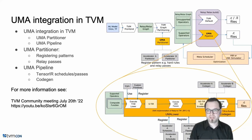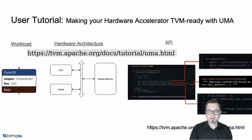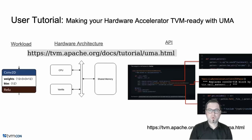In the scope of this lightning talk, I can only give you a tiny part of the big picture. If you're interested in more, have a look at the recording from the community meeting from July 20. A major goal of the UMA community is also to provide good documentation and executable step-by-step tutorials. For this reason, we created a user tutorial where a minimal accelerator called Vanilla — that can only process Conv2Ds — is integrated into TVM using the UMA APIs. The plan is also to soon add more advanced templates to the tutorial, currently referred to as strawberry and chocolate accelerators, which might deal with topics like hardware DMA or quantization.